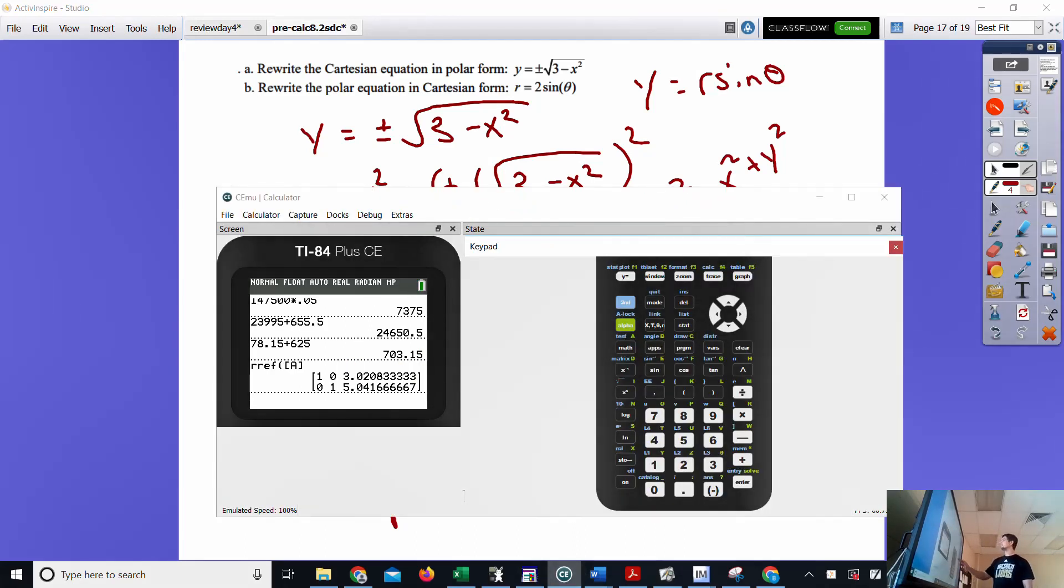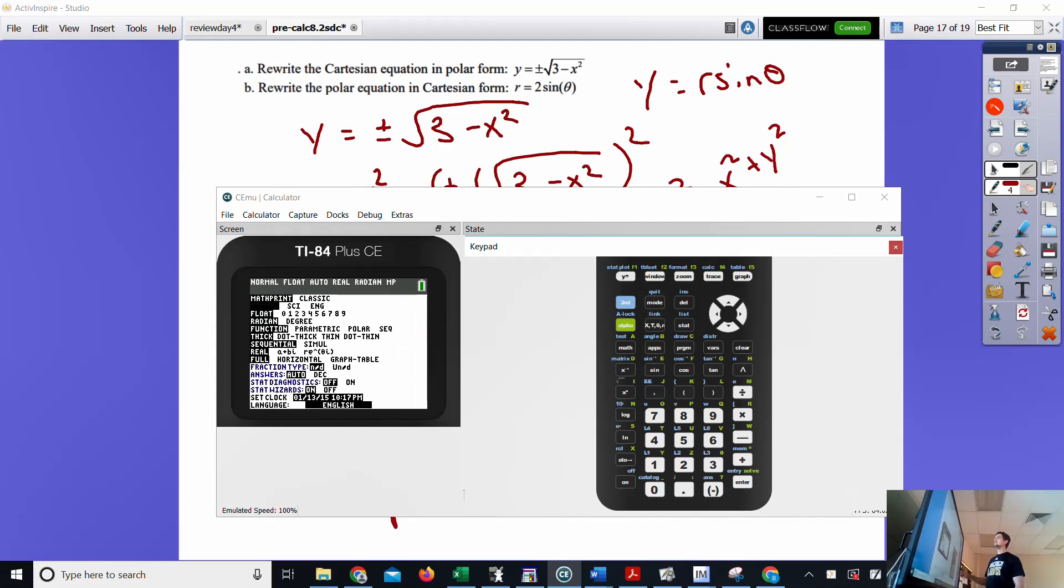Now, had you graphed the original equation, had you gone to y equals, and this is worth talking about. Maybe it'll help you comprehend what's going on. A square root of 3 minus x to the second and a negative square root of 3 minus x to the second forms a circle when you do a zoom square. So zoom 5 and you'll see a circle. Now in Cartesian planes, it actually doesn't finish it off. You can kind of see the gaps. But if I go to mode and I change over to polar, it'll do a much better job of graphing.